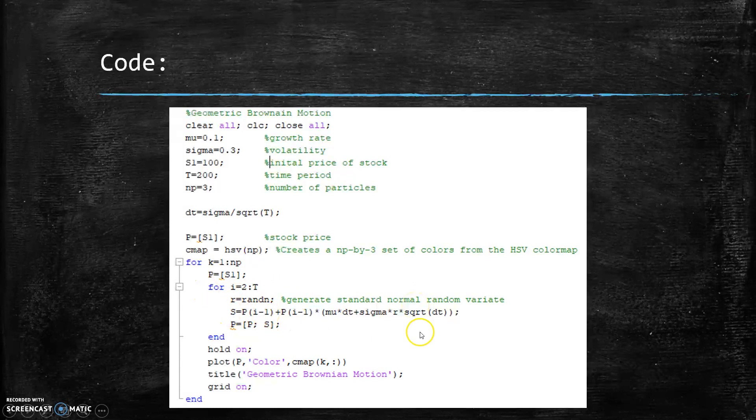And then we put that into S, which takes into account the growth rate and the initial stock price and things of that nature. So here this equation takes into account that. And it stores it in this matrix.